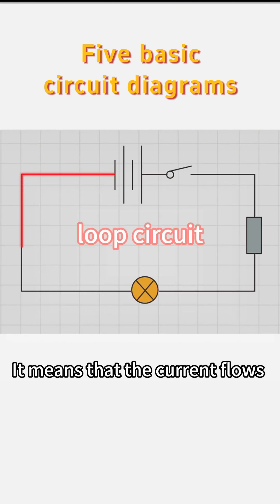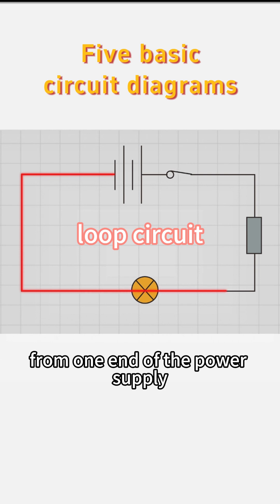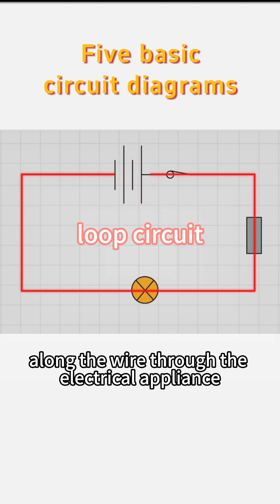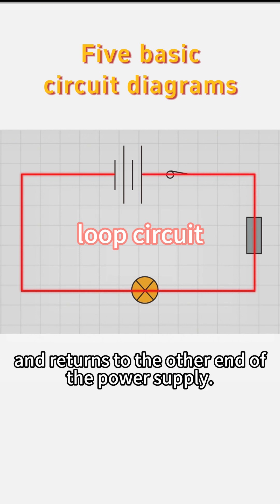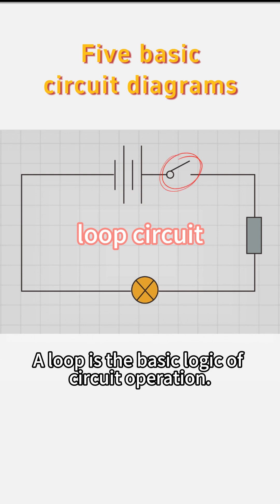The first is a loop. It means that the current flows from one end of the power supply along the wire through the electrical appliance and returns to the other end of the power supply. A loop is the basic logic of circuit operation.